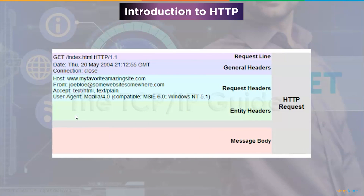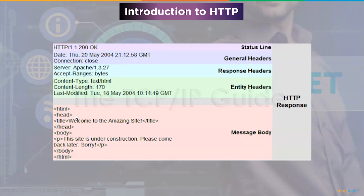HTTP is a request-response protocol that communicates between a client and a server. A client (browser) sends an HTTP request to the server, which responds with the requested content and status information. Every HTTP request has three parts: a request line, a request header, and an optional request body. The request line defines the method, which instructs the server how to handle the resource. The request header contains the request URL used to locate the resource, and it also defines which version of the HTTP protocol is being used.